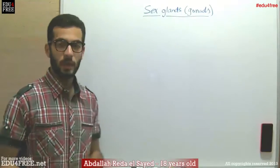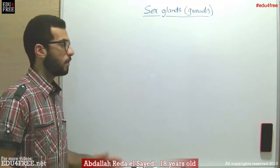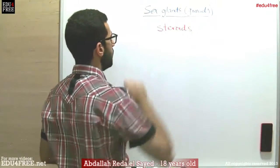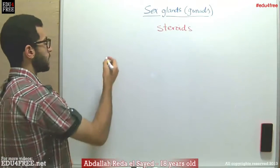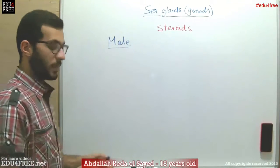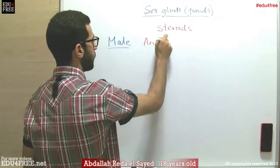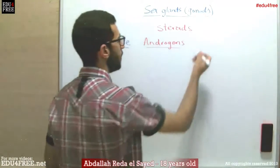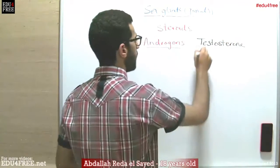This time we're going to talk about the sex glands, or the gonads. The hormones secreted from the gonads are steroids, and the male hormones are different from the female hormones. As for the male hormones, they are produced from the testis and they are called androgens. These androgens are mainly testosterone and androsterone.